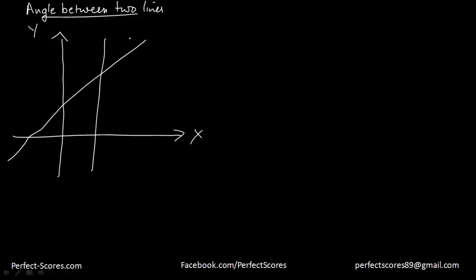Let's suppose this is line one and this is line two. The angle between the two lines is angle theta, and another angle is phi. We have alpha one and alpha two as the angles these lines make with the x-axis.